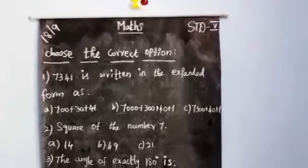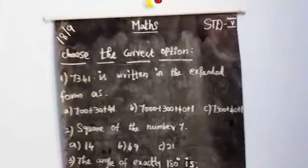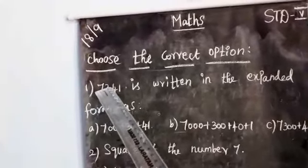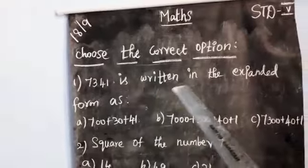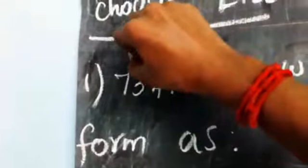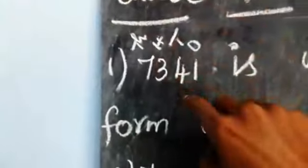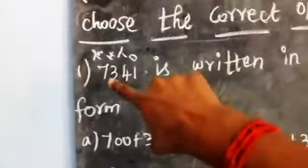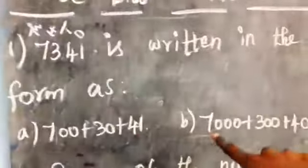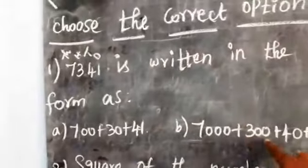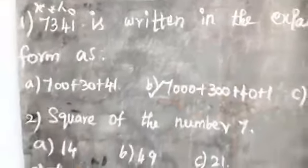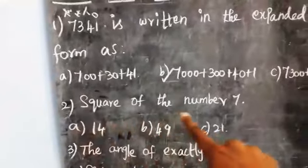Friends, we saw the revisions. Now moving on to Revision Part 3 - choose the correct options. Look at the first one: 7341 is written in the expanded form. Denote the place value: ones, tens, hundreds, thousands. So seven thousand plus three hundred plus four tens means forty, plus one. The correct answer is seven thousand three hundred plus forty plus one.